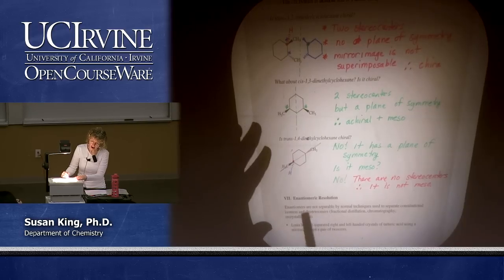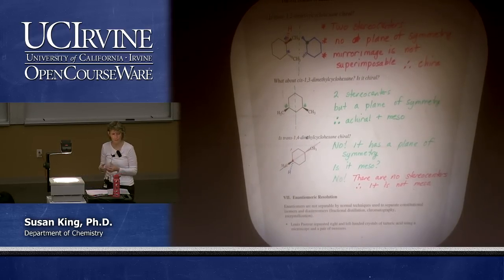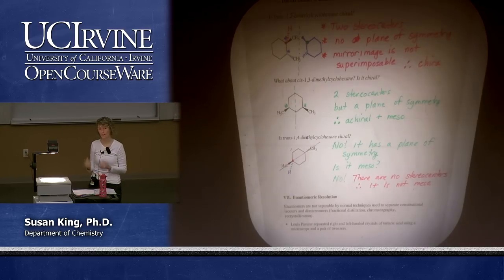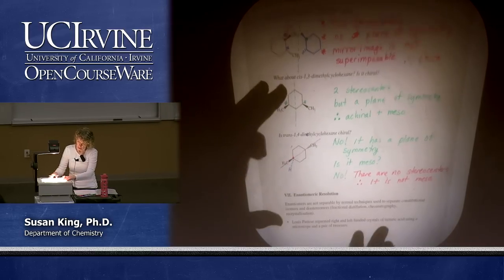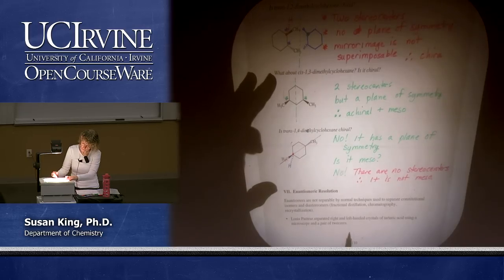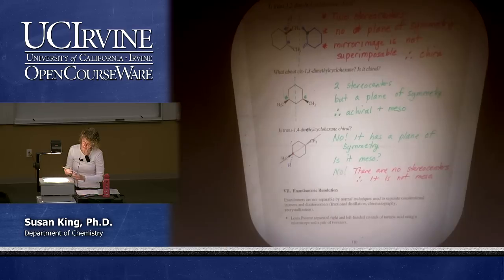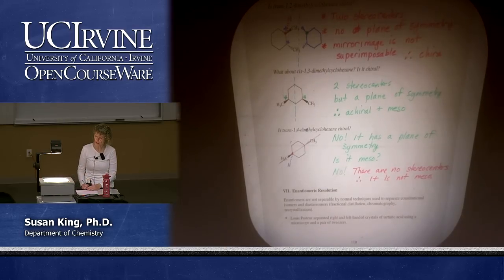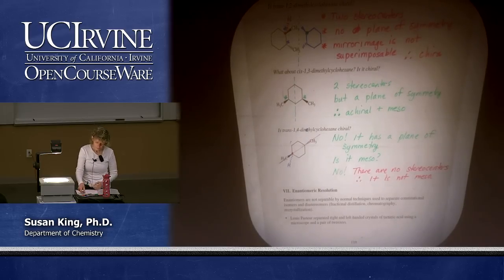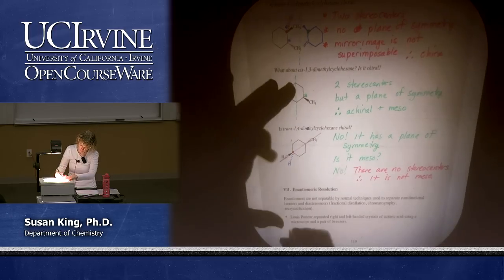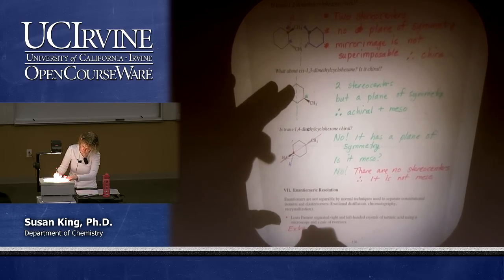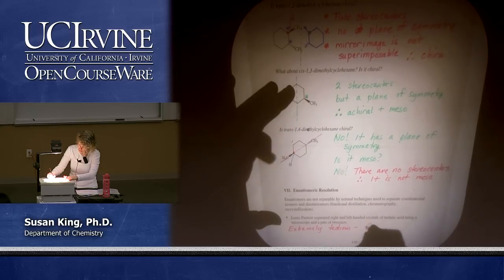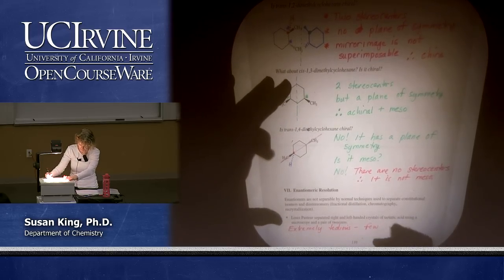How do we separate enantiomers? We know we have them — how do we separate them? We can separate diastereomers because they have different physical properties, but enantiomers have the same physical properties. Back when enantiomers were first being discovered, Louis Pasteur separated right and left-handed crystals of tartaric acid using a microscope and a pair of tweezers — imagine how time consuming that would be. It's extremely tedious and not practical. Not only that, but few racemic compounds crystallize as separate enantiomers.